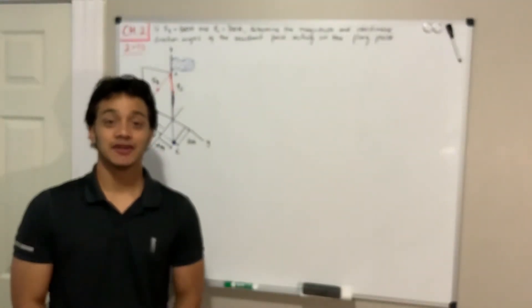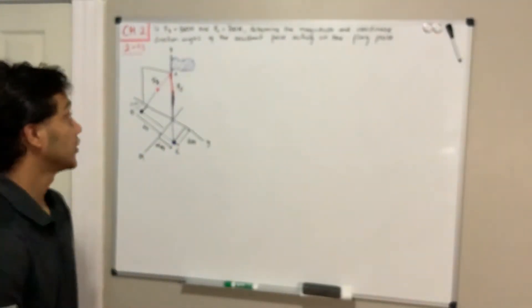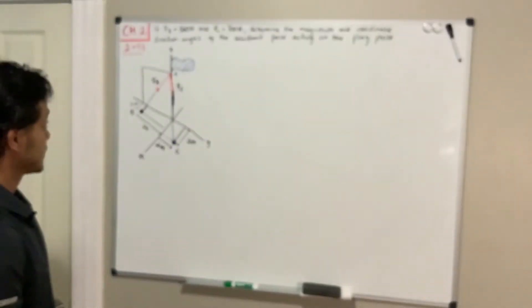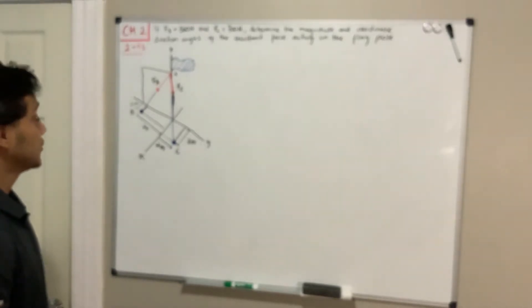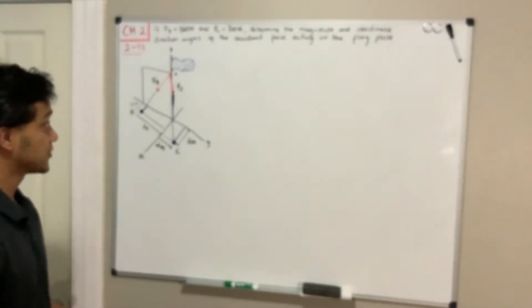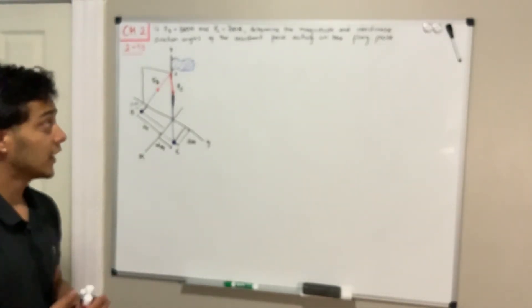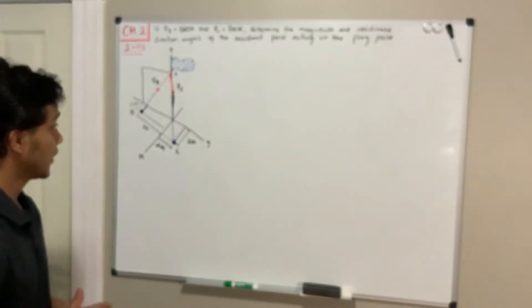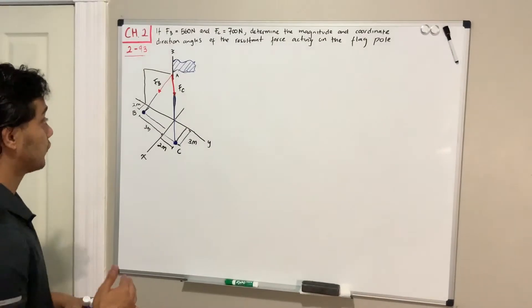Welcome back guys to Learning by Teaching. We're in statics and we're going to do problem 2-93. It says: if the force of B is equal to 560 newtons and the force C is equal to 700 newtons, determine the magnitude and coordinate direction angles of the resultant force acting on the flag pole.